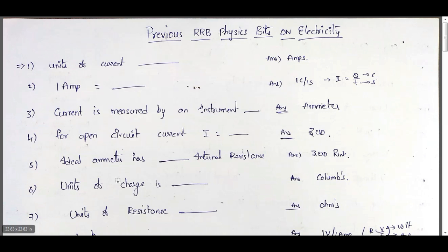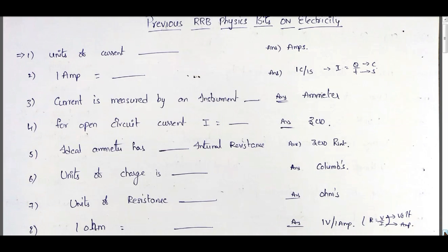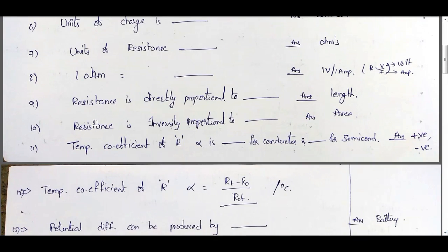Units of charge are coulombs, and units of resistance are ohms. 1 ohm equal to dash — according to Ohm's law, resistance R equal to voltage by current. Units for voltage are volts and for current are amps, so 1 ohm equal to 1 volt per 1 amp.